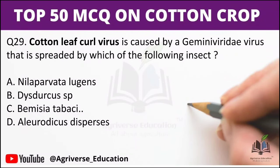Next question: Cotton leaf curl virus is caused by Gemini virus (family Geminiviridae) and is spread by which insect? Options are: A) Neilapar with allegiance, B) Dialeurodes species, C) Bemisia tabaci, D) Aleurodicus disperses. Option C is the right answer — Bemisia tabaci is the spreading insect in the case of cotton leaf curl virus.